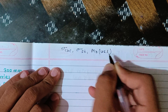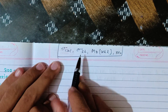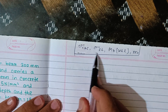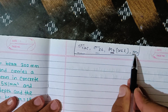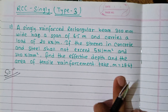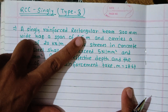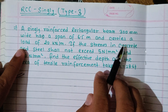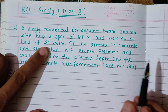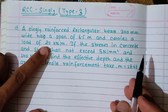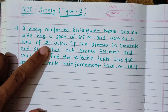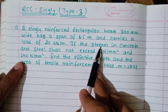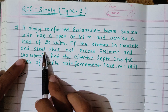In this single third type, we find the stresses — obviously statics: statics, moment — meaning m and the bending moment. A singly reinforced rectangular beam 300 mm wide has a span of 6.5 meters and carries a load of 20 kN per meter. From this we get the bending moment using M = WL²/8 for UDL.